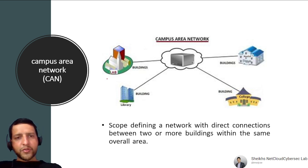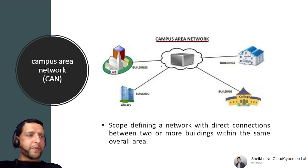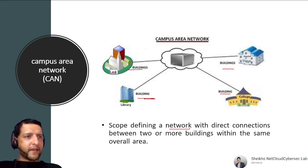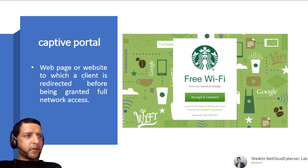A Campus Area Network (CAN) is a network with direct connections between two or more buildings within the same overall area — for example, connecting different buildings within a college campus. Other network types include LAN, MAN, WAN, GAN (Global Area Network), HAN (Home Area Network), BAN (Body Area Network), and PAN (Personal Area Network).